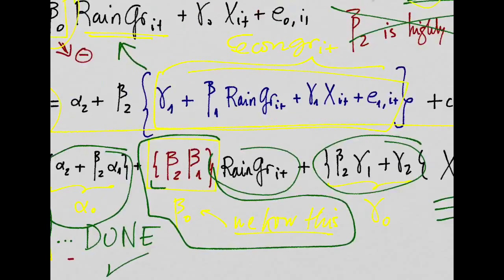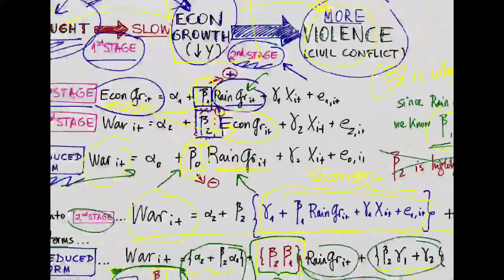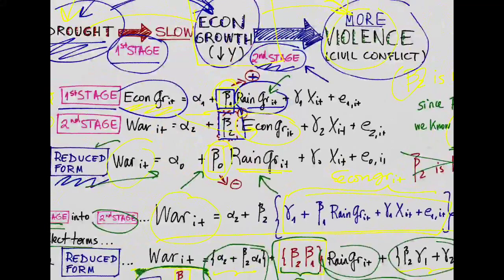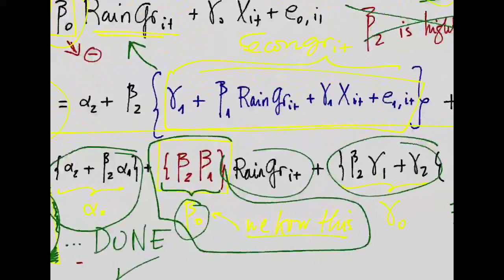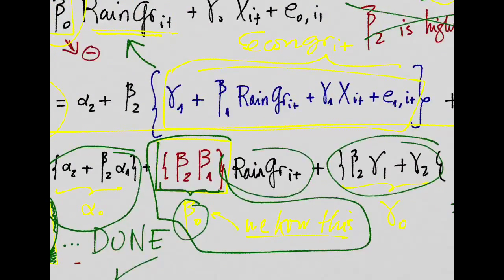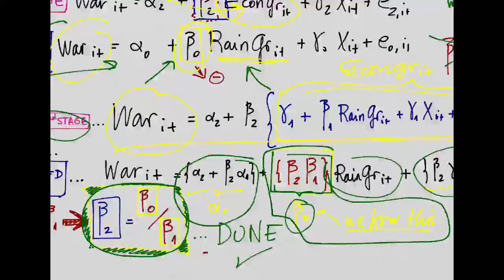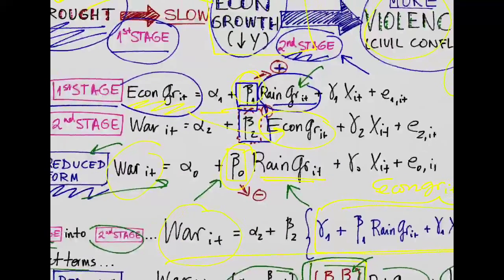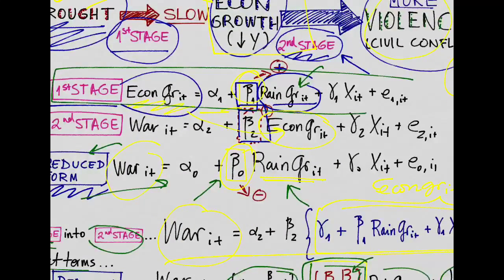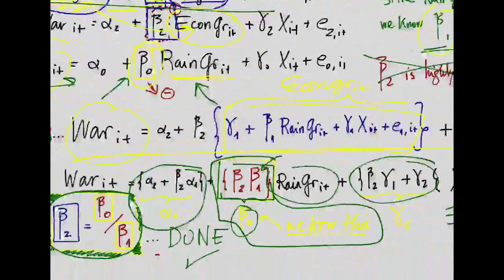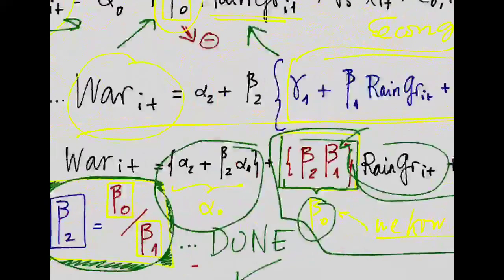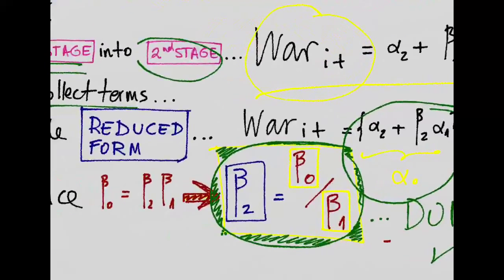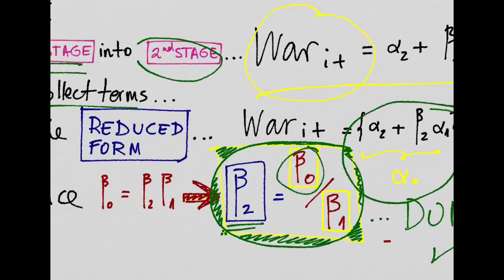Notice that this is something that we know. This is something that we have estimated before by running this reduced form regression. It's basically beta 0, and we can get a beta 0 that's a function of beta 2 and beta 1. But remember that we also know beta 1 because we can run this first stage regression here. And we estimated beta 1. The authors do this. And thus we could basically just solve for beta 2 as a function of beta 0 divided by beta 1.